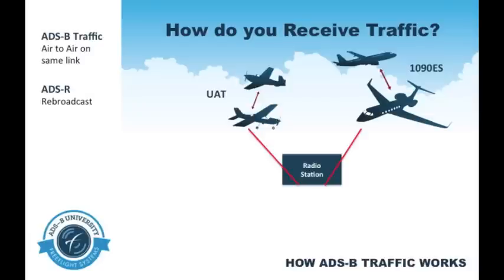The second way to receive traffic is through ADS-R, or Automatic Dependent Surveillance Re-broadcast. This allows 1090 equipped aircraft to see 978 equipped aircraft, and vice versa. This system is dependent on both aircraft being in range of an ADS-B ground station. Both aircraft will be communicating their position with that ground station, which then rebroadcasts that position information to the other aircraft in the area.